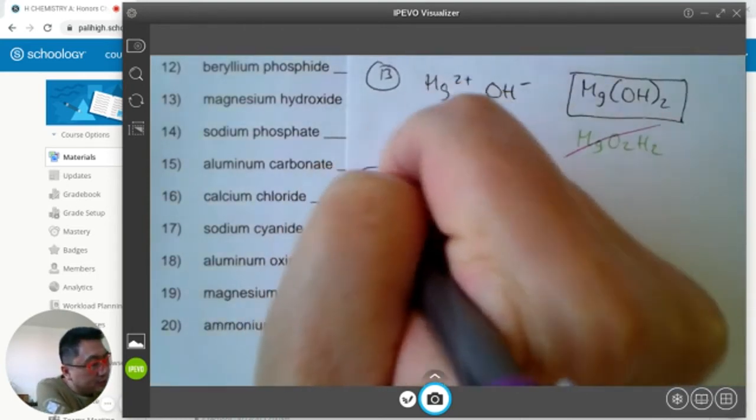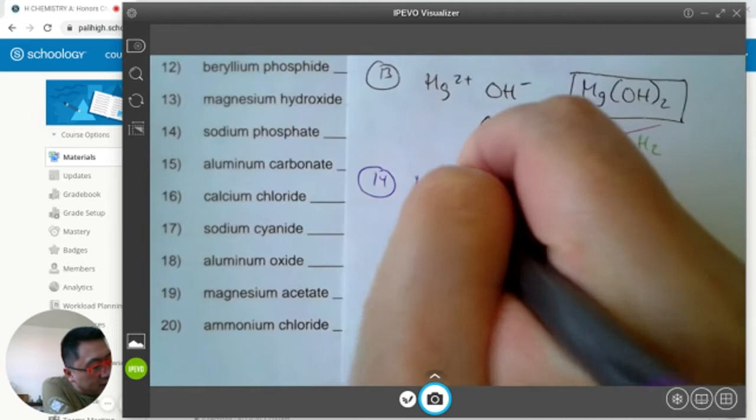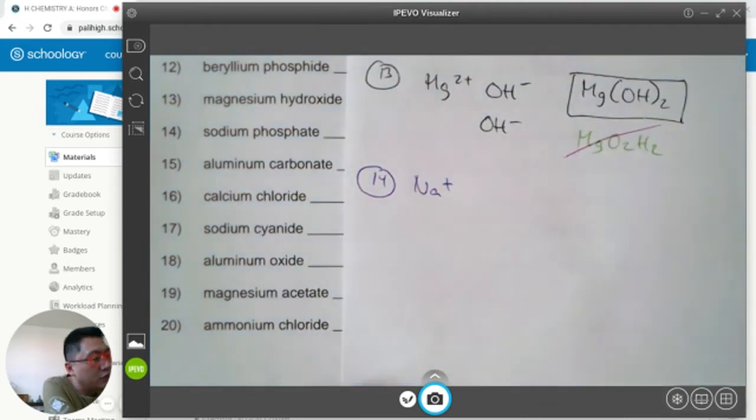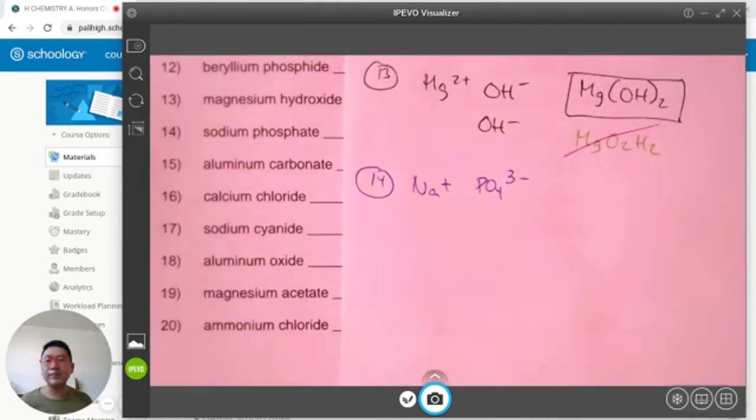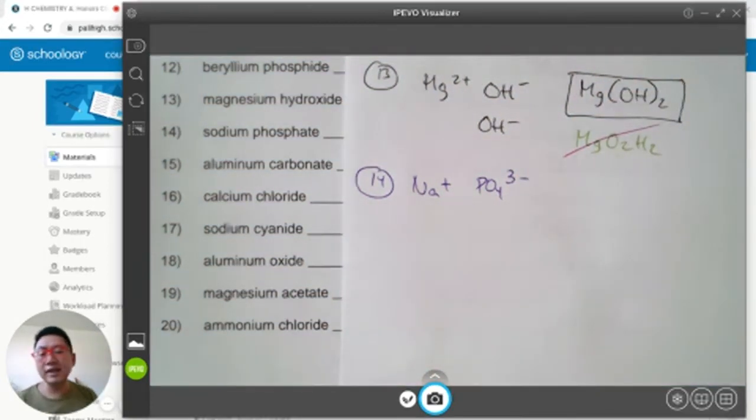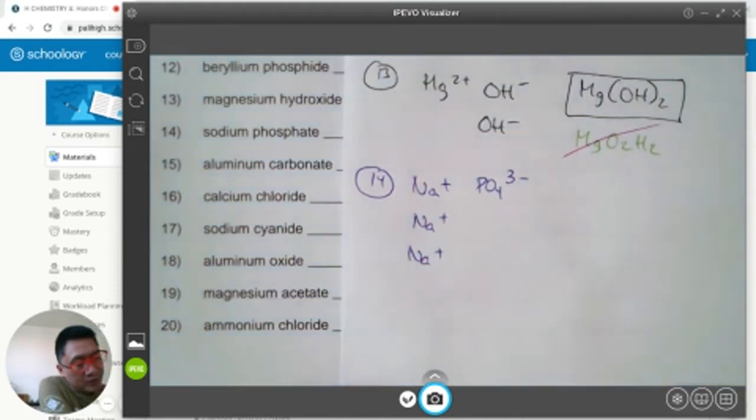Question number 14 is sodium phosphate. Sodium is Na on page 45. Phosphate is PO4, its charge is minus 3. Positive 1, negative 3, add up to 0? No. I need three sodiums, each one being positive 1. Now that's positive 3.